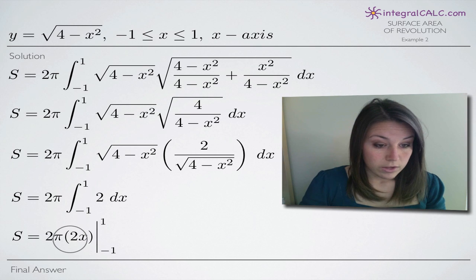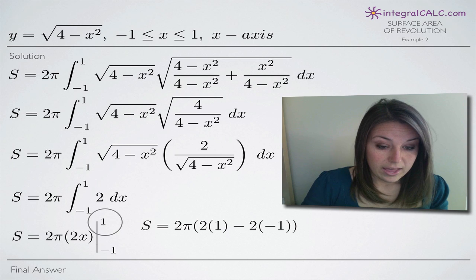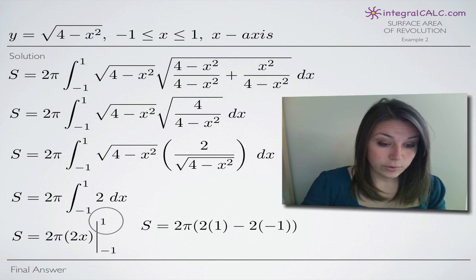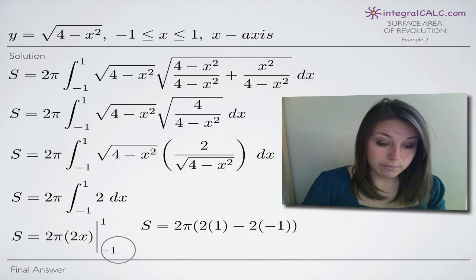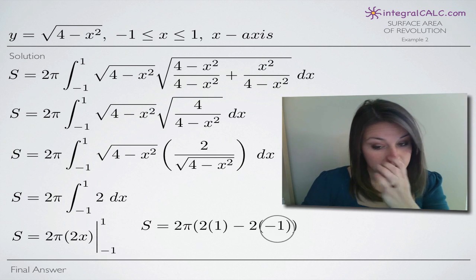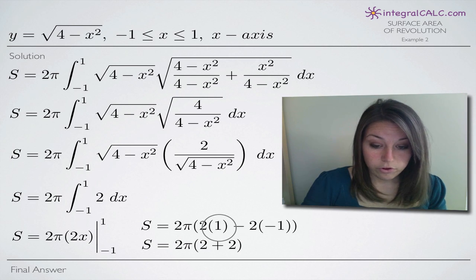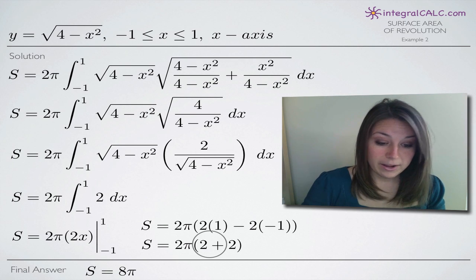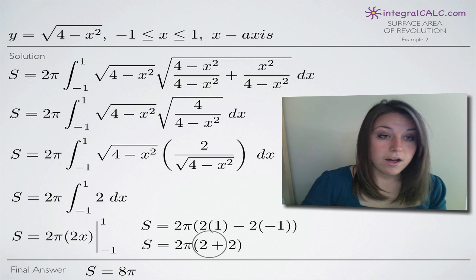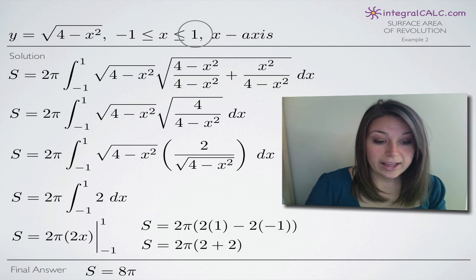We have two, and the integral of two is 2x. So we end up with 2π times 2x, evaluating on the range negative one to one. We plug in the top number first, which is 1, then subtract, then plug in the bottom number, which is negative 1. To simplify inside the parentheses, we have 2 plus 2 because of the double negative, giving us 4. That gives us 2π times 4, which gives us our final answer of 8π. So 8π is the surface area of the revolution of this function around the x-axis between x equals negative one and x equals one.